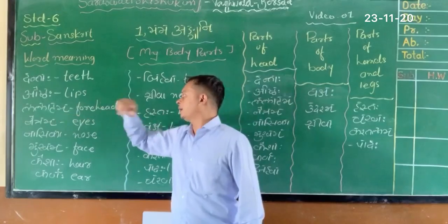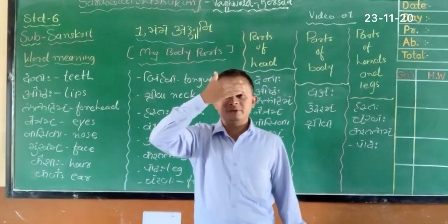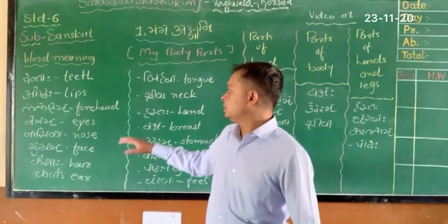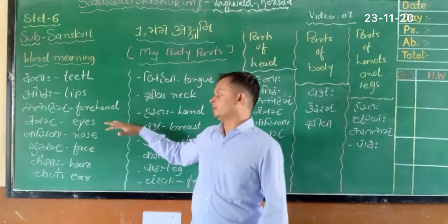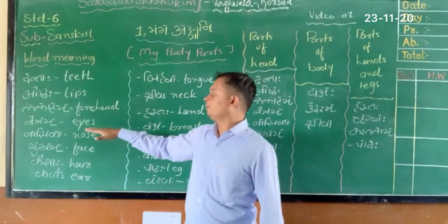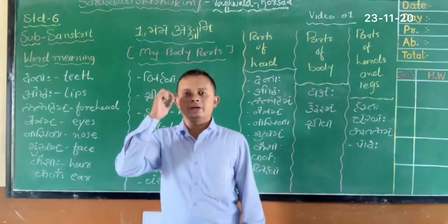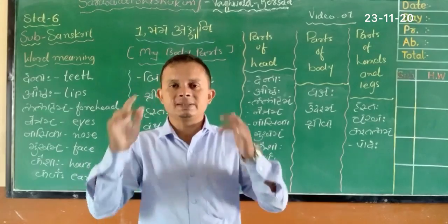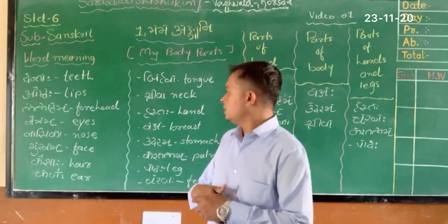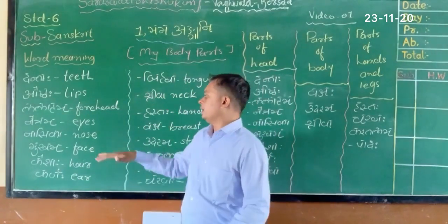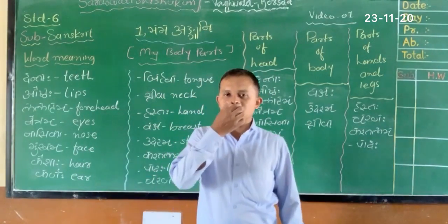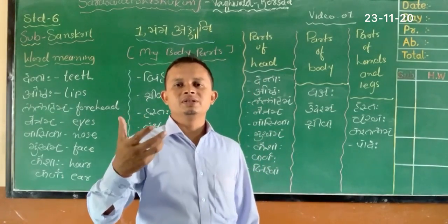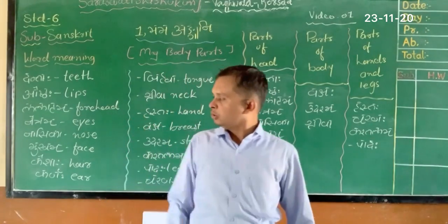Next is Lalatah. Lalatah means our forehead. Now Netram — Netram means our eyes. And Nasika — Nasika means our nose.